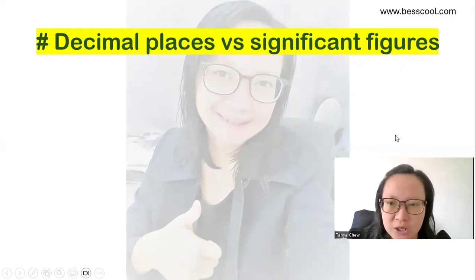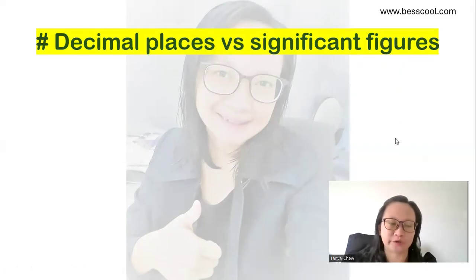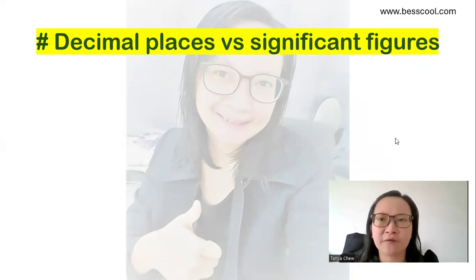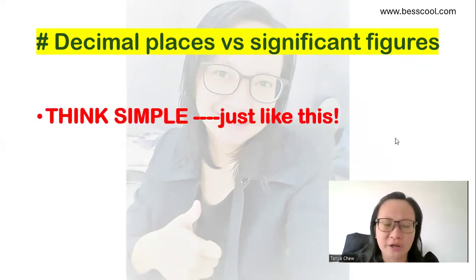First thing is you have to clear your doubts on the decimal places and significant figures. I got a lot of questions from my own students asking me whether they should be writing - am I supposed to follow the decimal places of the data that I calculated, or am I supposed to follow the significant figures? And if I follow the decimal places, how many decimal places should I put for my final answer? Or how many significant figures should I put for my final answer? So I want you to think it very simple, super duper simple, just like this.